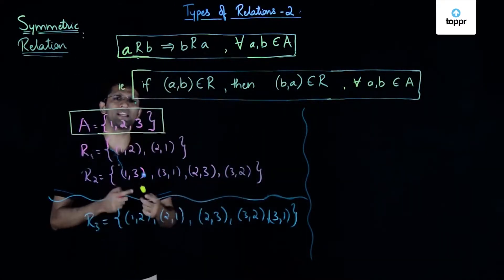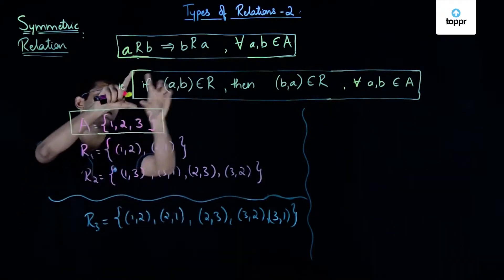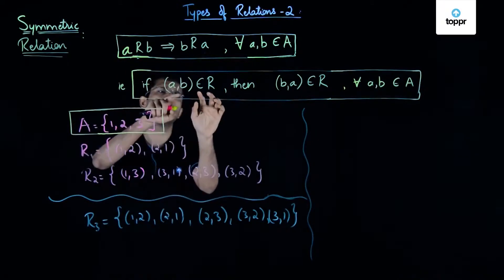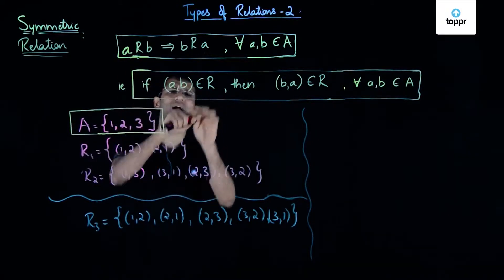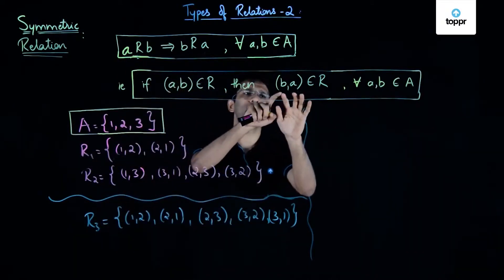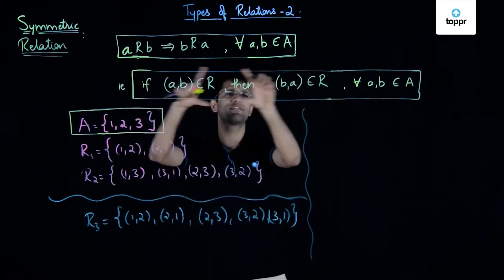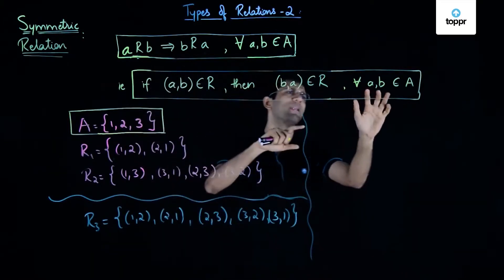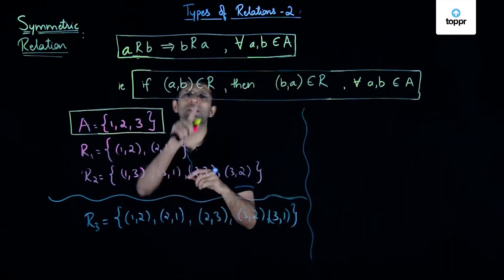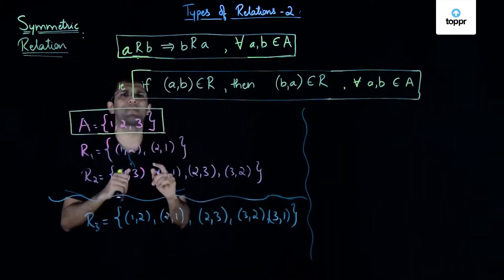This can also be stated in a second way: if the ordered pair (A, B) is an element of a relation R, then (B, A) should also be an element of R. When this condition is satisfied for every A and B belonging to set A, we say that relation R is a symmetric relation on set A.